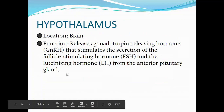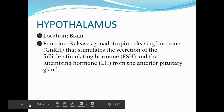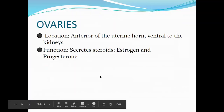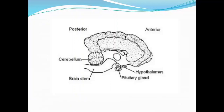One of the glands involved in the estrus cycle is the hypothalamus, which is located in the brain. We also have another endocrine gland called the pituitary gland, which is located just below the hypothalamus.